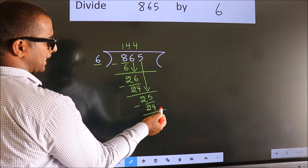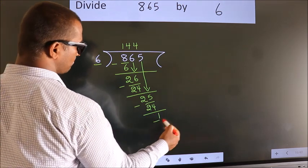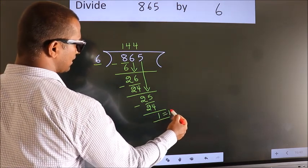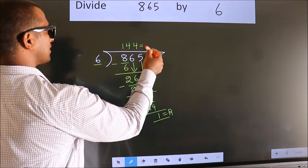No more numbers to bring it down. So, we stop here. This is our remainder. This is our quotient.